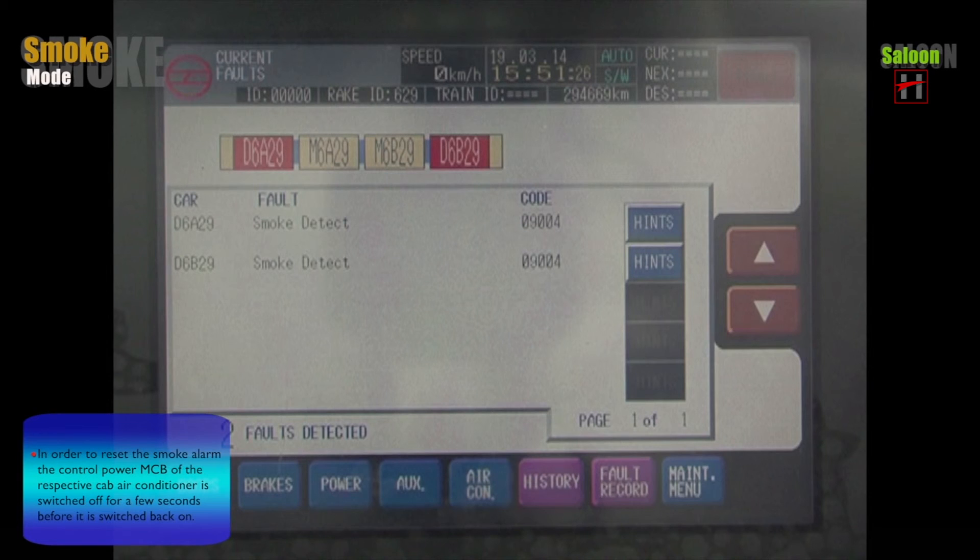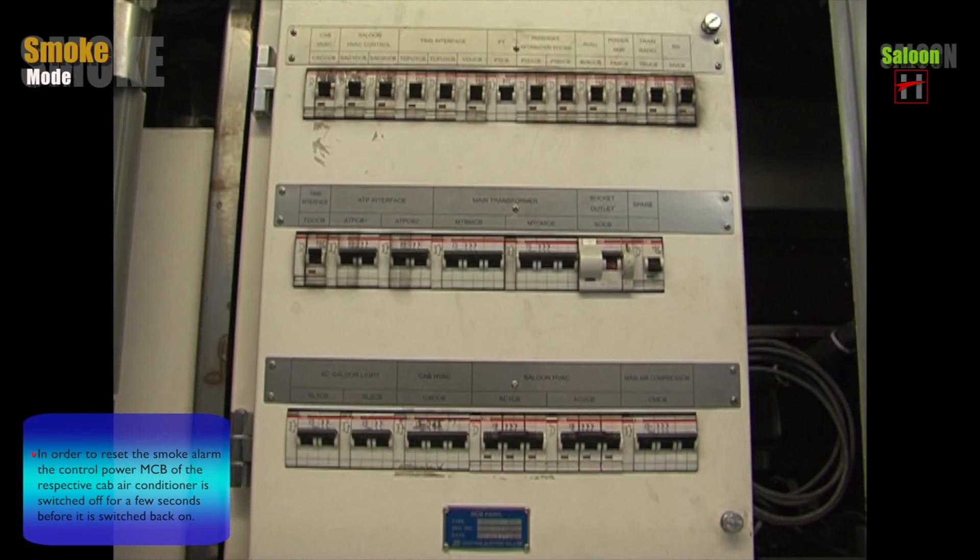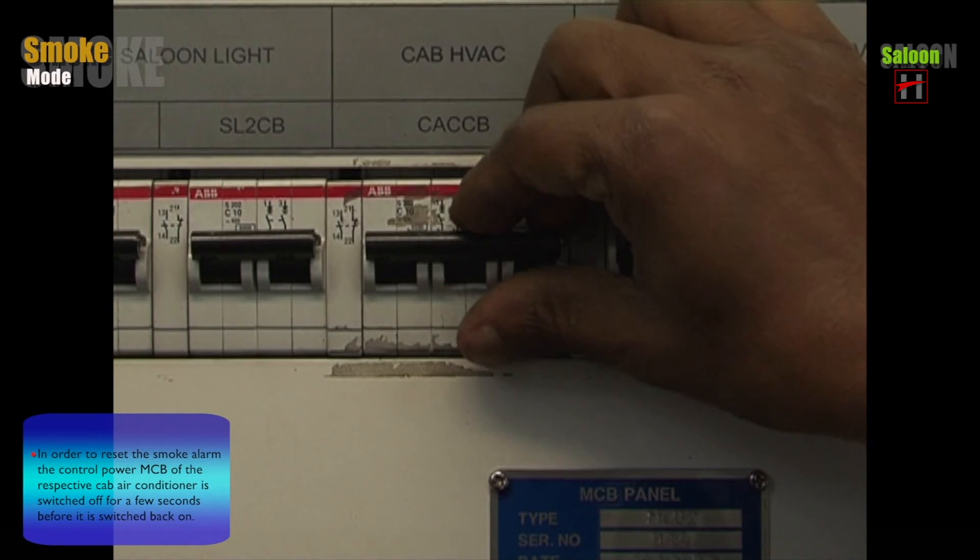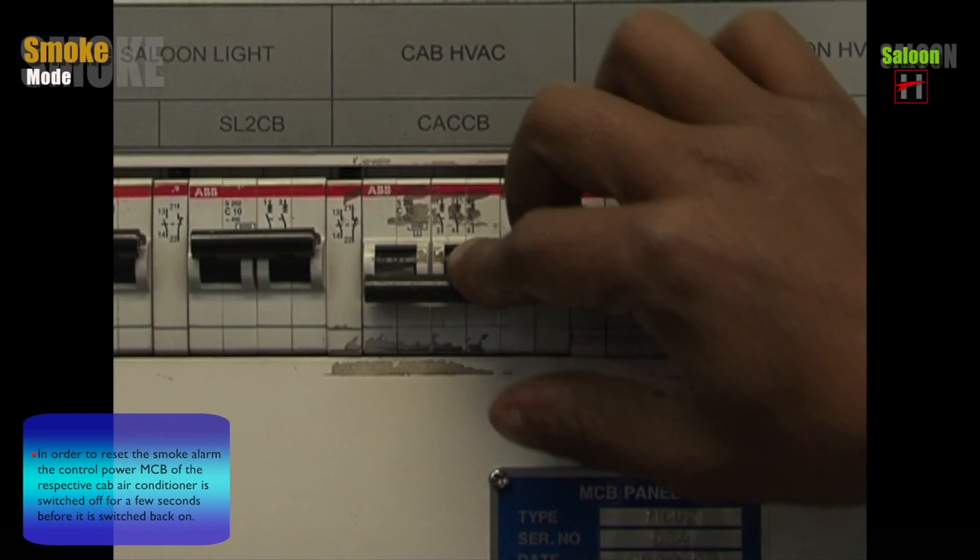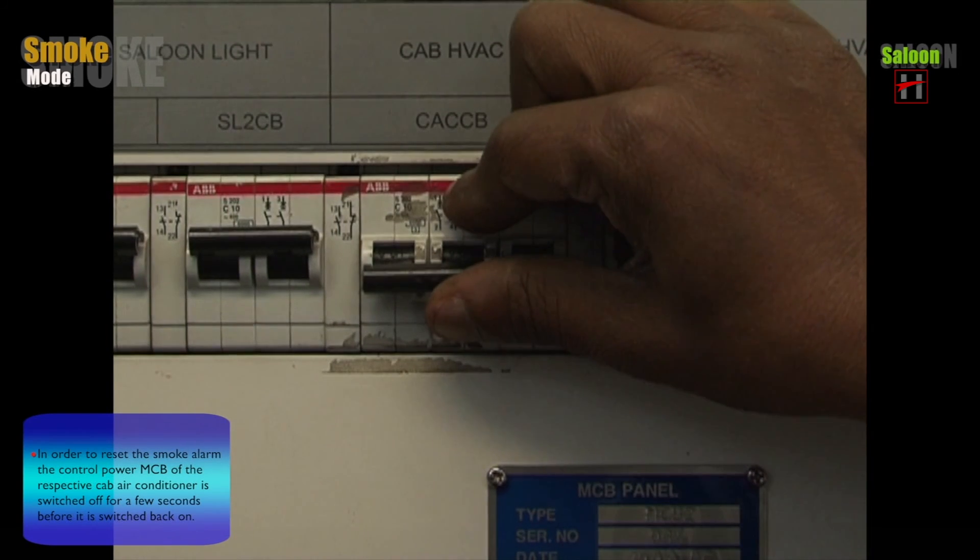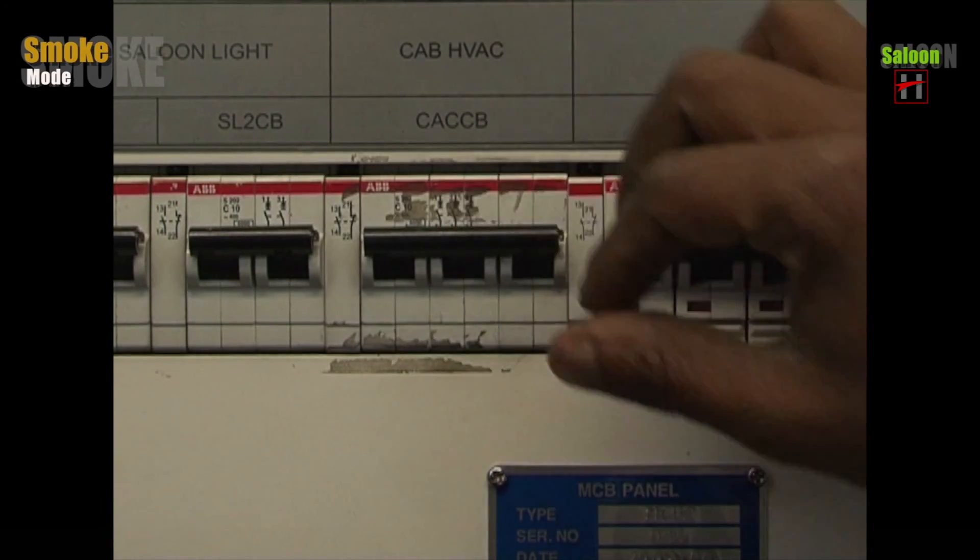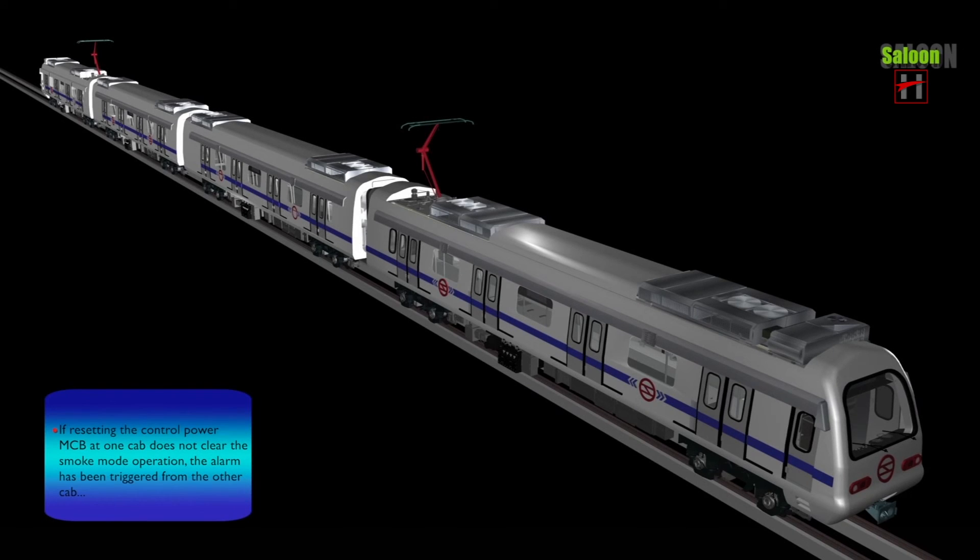In order to reset the smoke alarm, the control power MCB of the respective cab air conditioner is switched off for a few seconds before it is switched back on. If resetting the control power MCB at one cab does not clear the smoke mode operation, the alarm has been triggered by the other cab and its control power MCB will have to be reset too.